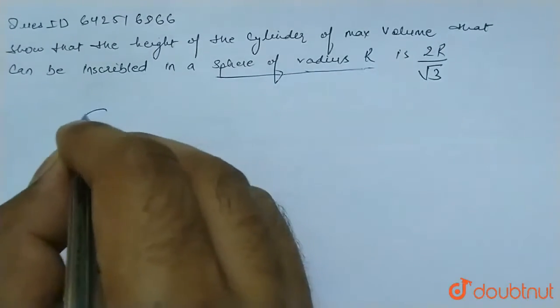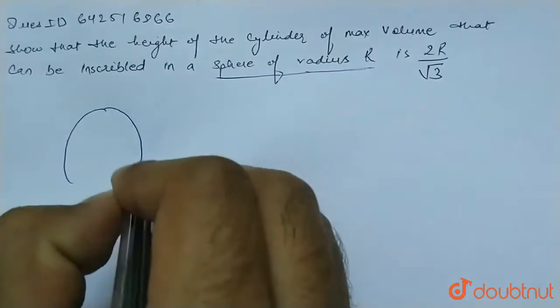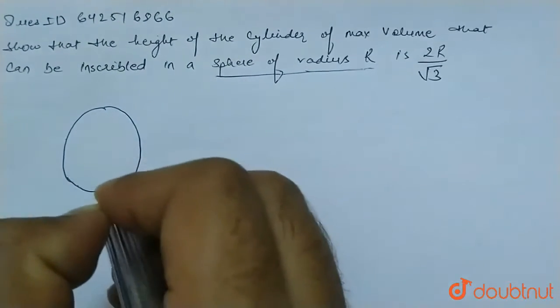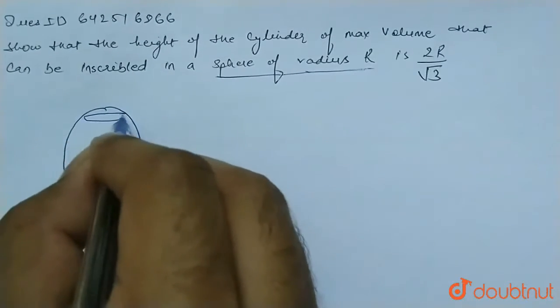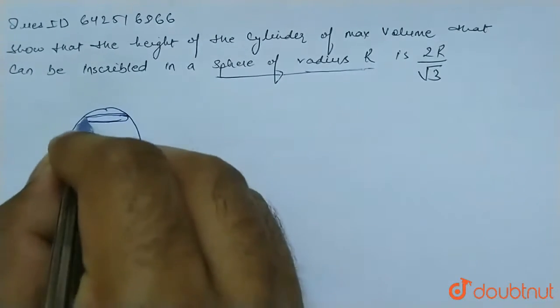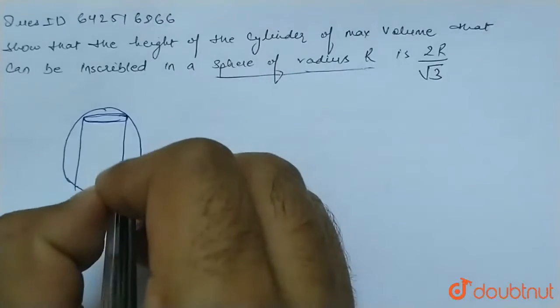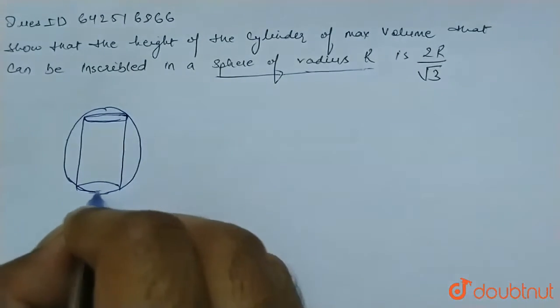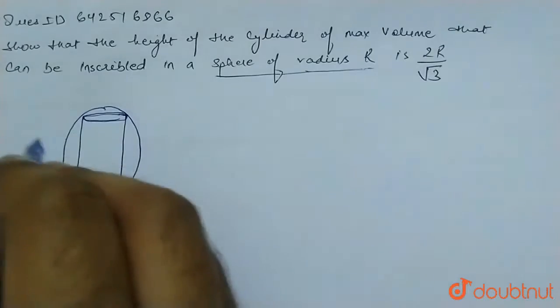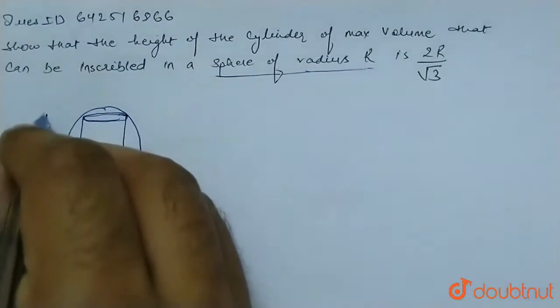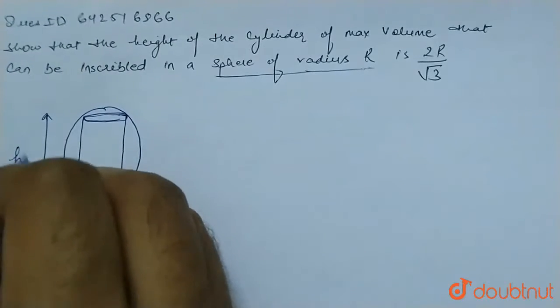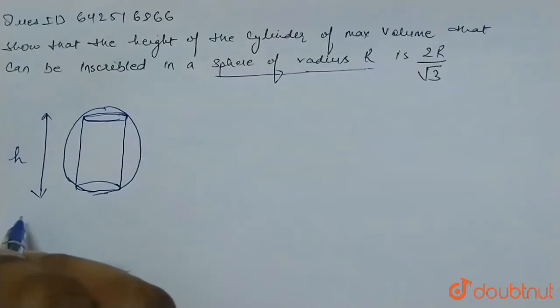So suppose this is a sphere of radius R. The cylinder is inscribed inside it. Let the height of this cylinder be small h.